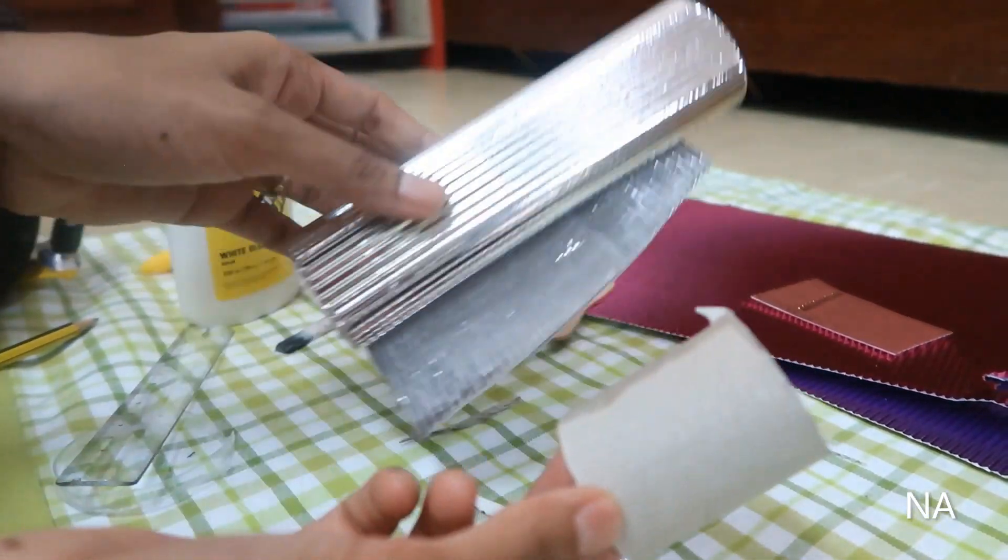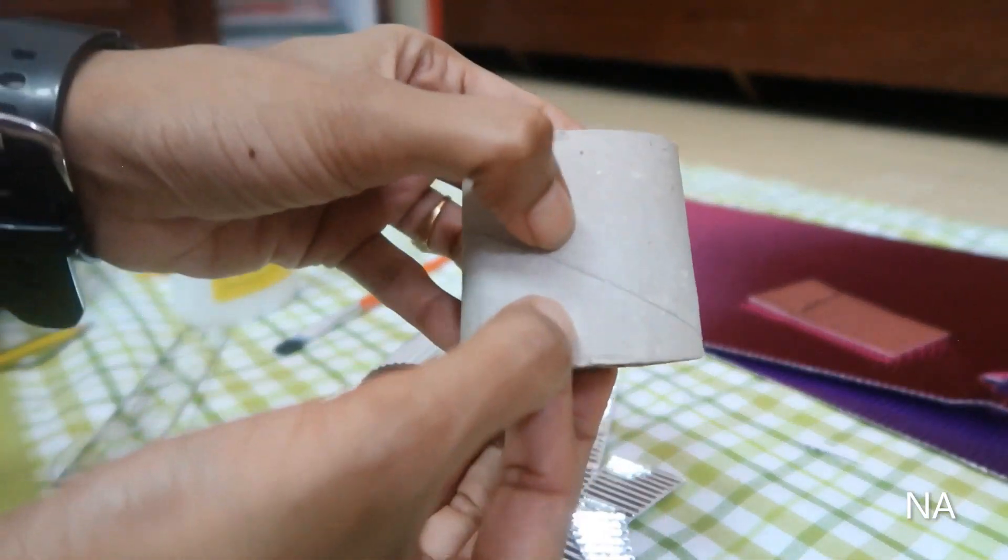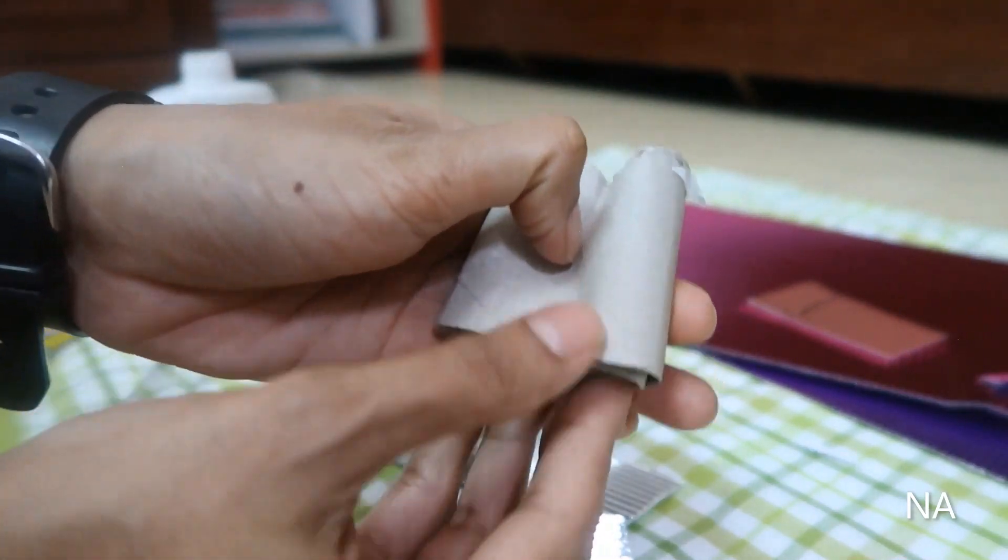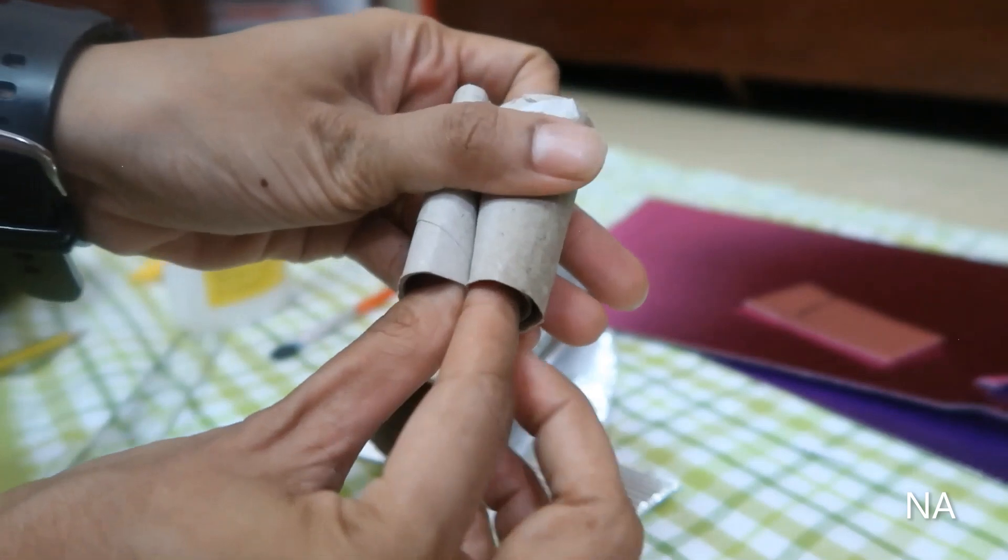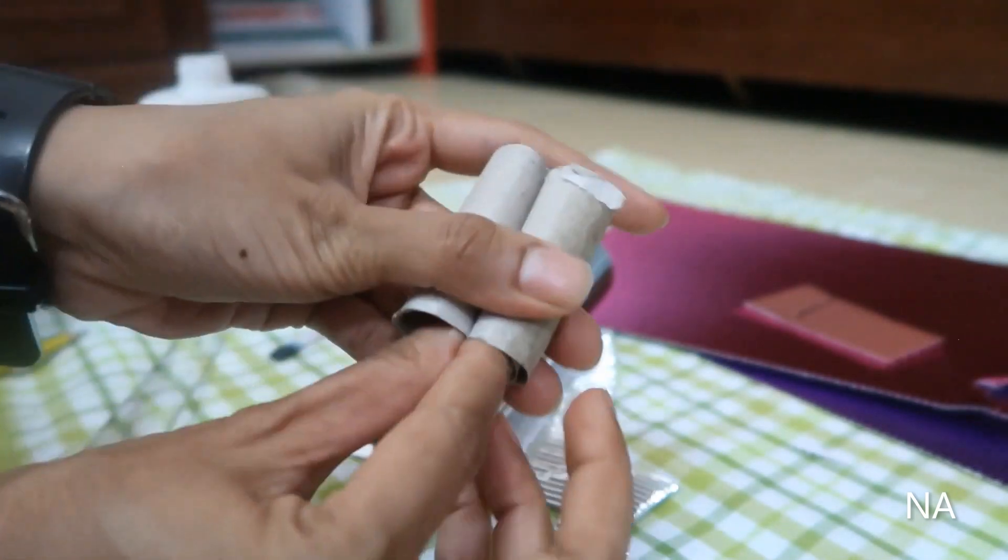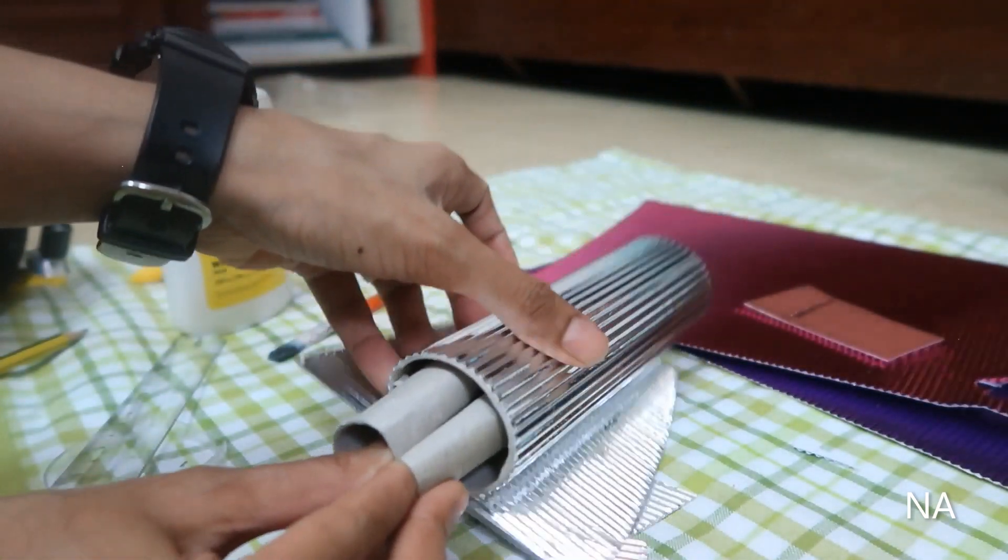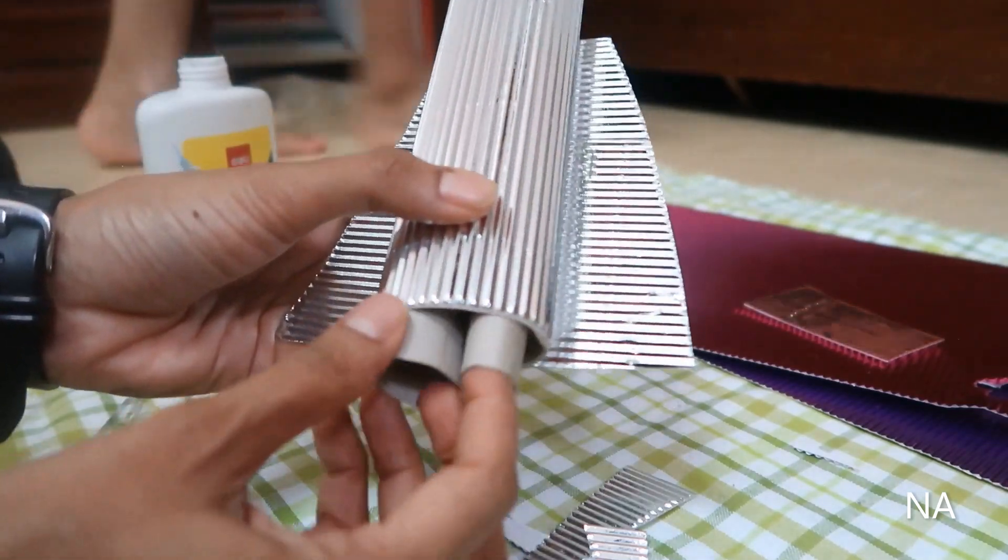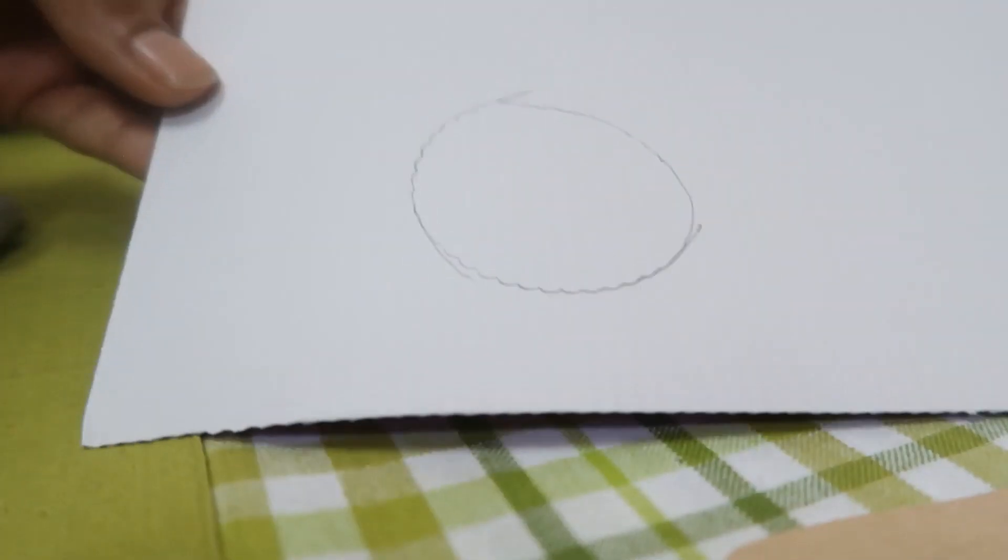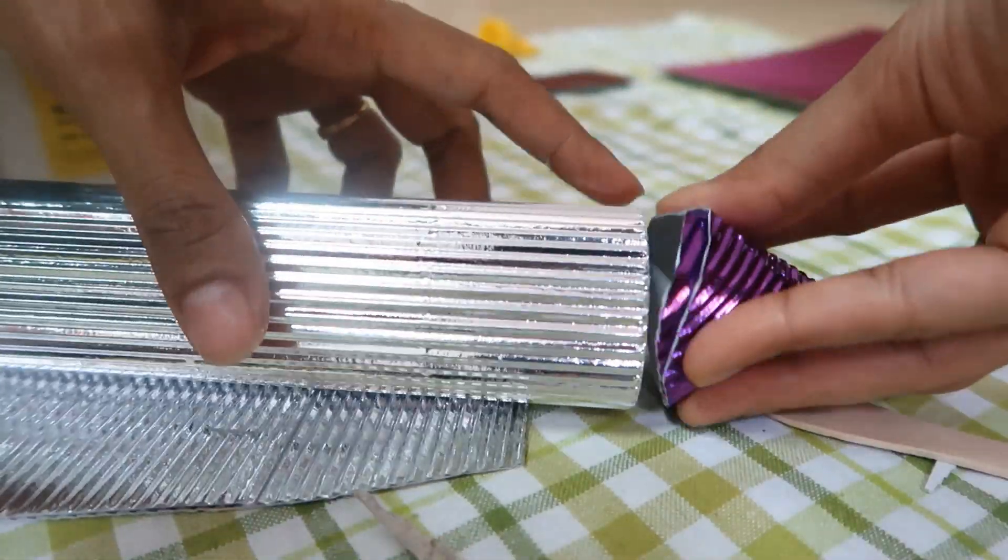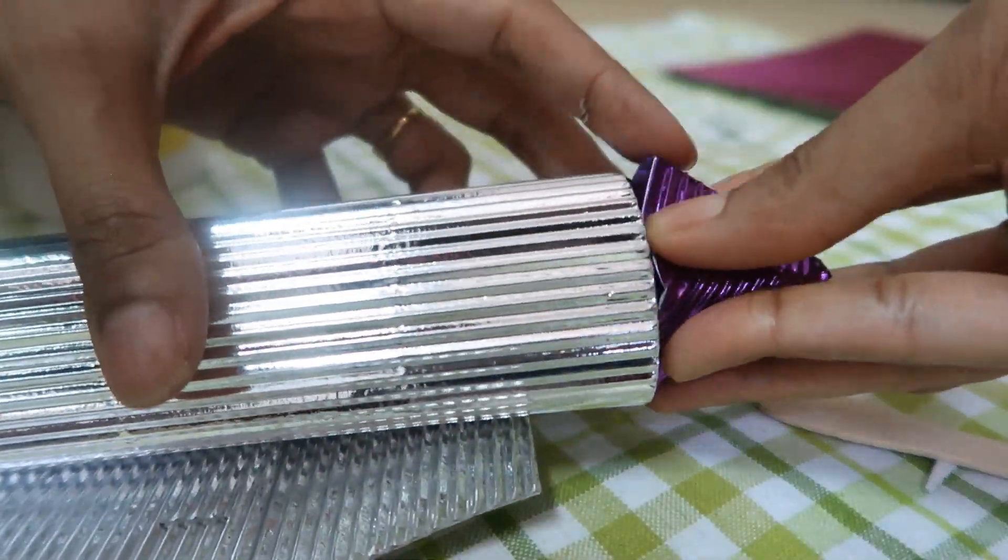For the bottom part we need to make a main engine. For that I have taken the trimmed out tissue roll and just fold as shown and attach to the bottom part. Now just a similar way, draw the circle, make a cone and attach to the top part as shown.